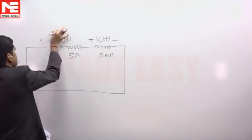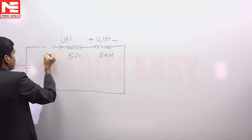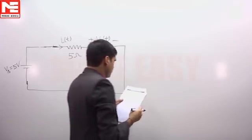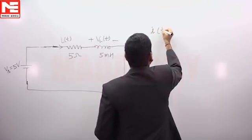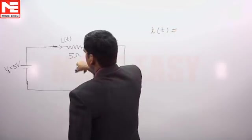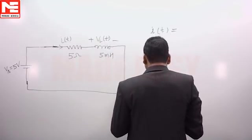Switch is closed. Now we want to calculate current i(t), then i(t) will be equal to in steady state Vs by R, so Vs by 5.